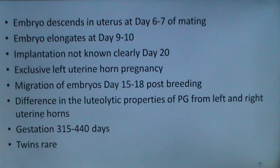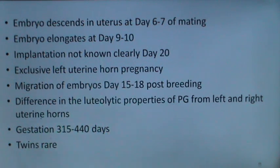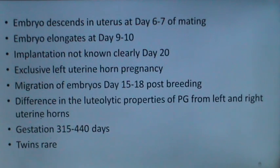There are differences in luteolytic properties of prostaglandin from the left and right uterine horns. Prostaglandin from the left uterine horn causes luteolysis of the CL on both left and right ovaries, whereas prostaglandin from the right uterine horn causes luteolysis only of the CL on the right ovary. Gestation length in camels is very long — 315 to 440 days have been reported — and twins are exceptionally rare.